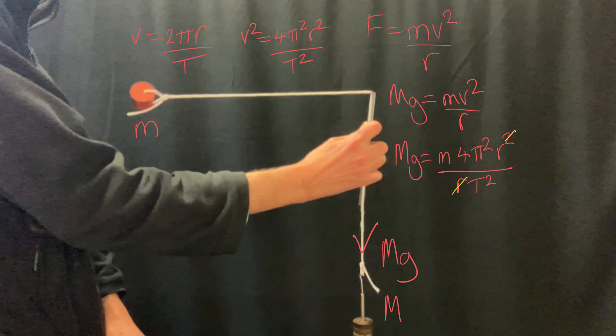We can simplify that slightly and rewrite it as Mg equals 4π²rm times 1 over T².